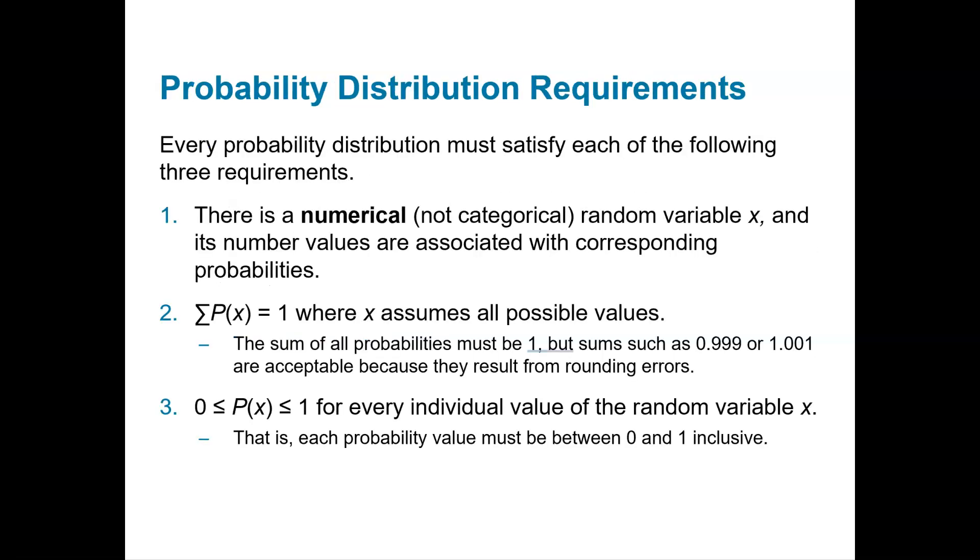These are the three considerations we need to determine if something is a probability distribution. First, is the random variable x numerical? Then, do all the probabilities add up to one, with a little bit of space for rounding errors? And is each individual probability between 0 and 1?